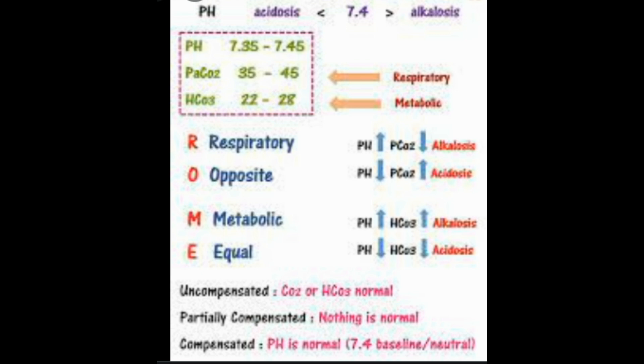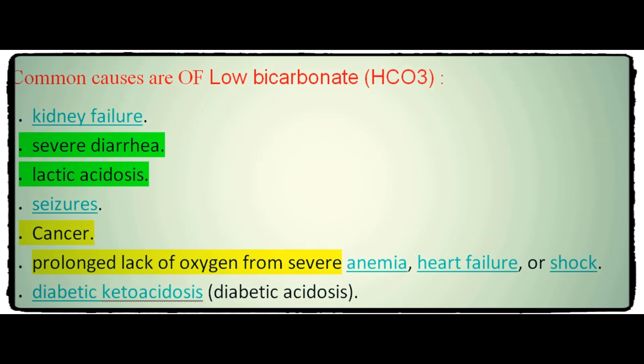Low bicarbonate (HCO3) with low pH (less than 7.35) indicates metabolic acidosis. Common causes include kidney failure, severe diarrhea, lactic acidosis, seizures, cancer, prolonged lack of oxygen from severe anemia, heart failure, shock, and diabetic ketoacidosis. Low bicarbonate with high pH (greater than 7.45) is called respiratory alkalosis, with common causes including hyperventilation, fever, pain, and anxiety.